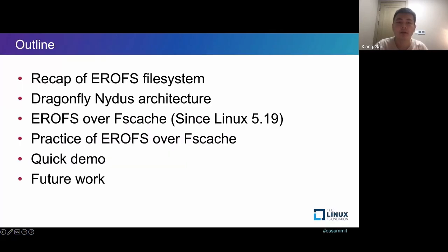This topic consists of the following parts. First, I'd like to recap the EROFS file system, which has been landed in the Linux kernel upstream for about four years. Then I will show the Dragonfly NIDAS architecture. Next, we are going to dip into the EROFS over FSCache features, which has already been in the kernel since Linux 5.19. After that, Xinyi will talk more about the real practice of EROFS over FSCache and play a quick demo. Finally, we'd like to spend a minute to show our future work.